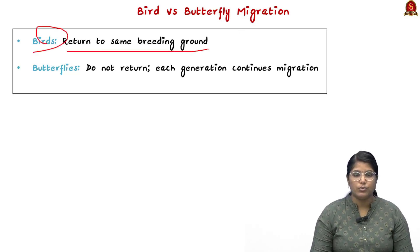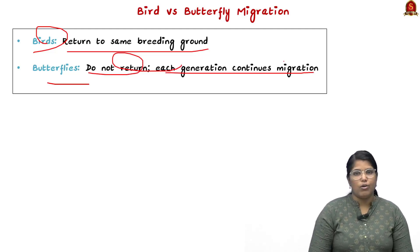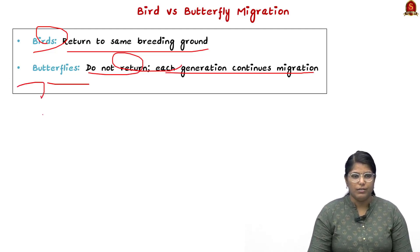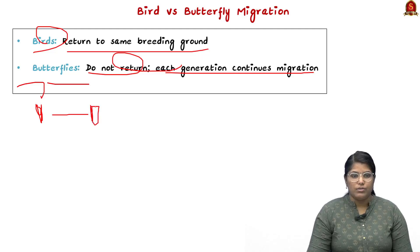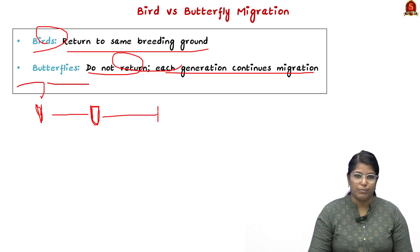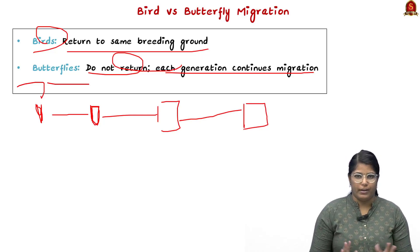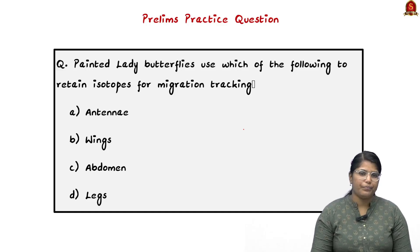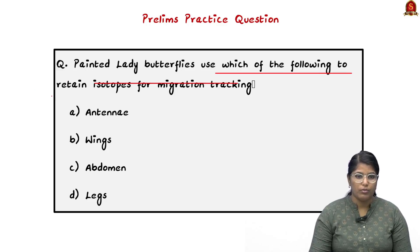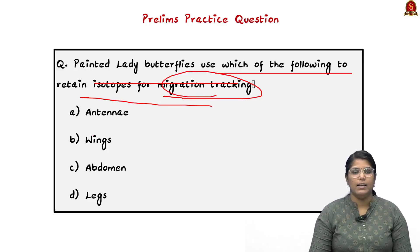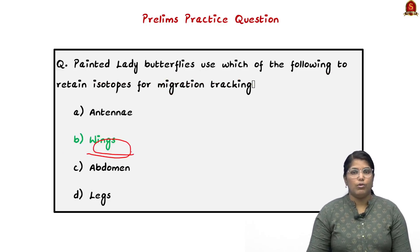A key difference between birds and butterflies: birds return to the same breeding ground, but butterflies do not return — each generation continues migration. One generation travels a certain distance, lays cocoons, and the next generation hatches and moves to the next place, completing the migratory cycle over multiple generations. This is how butterflies and birds are different. A prelims question: painted lady butterflies use which of the following to retain isotopes for migration tracking? The correct answer is option B — wings.